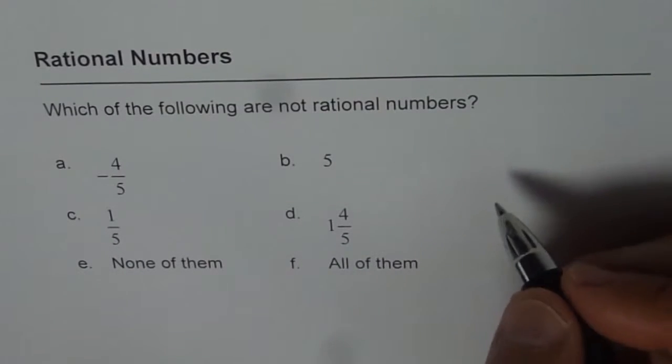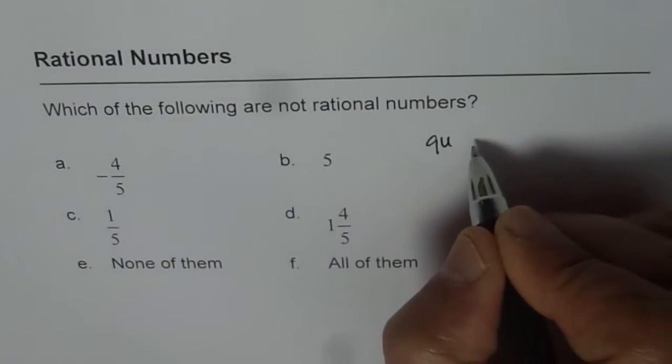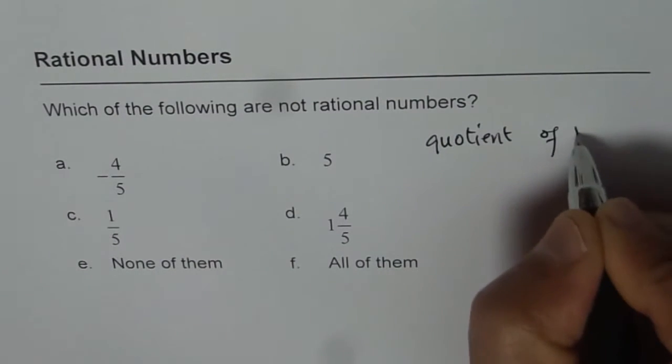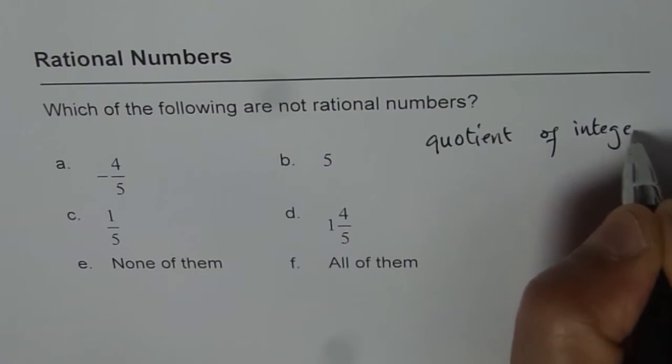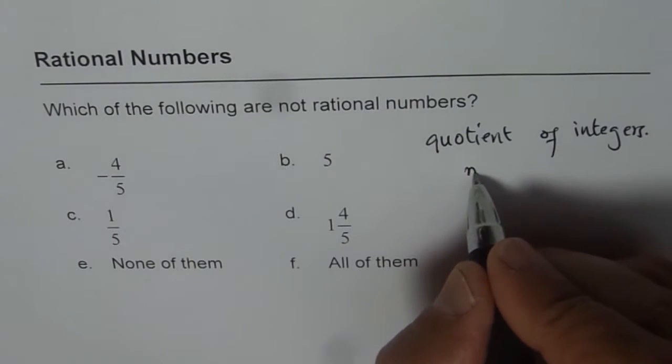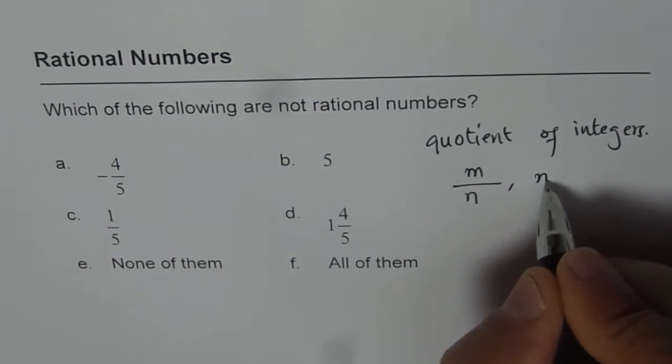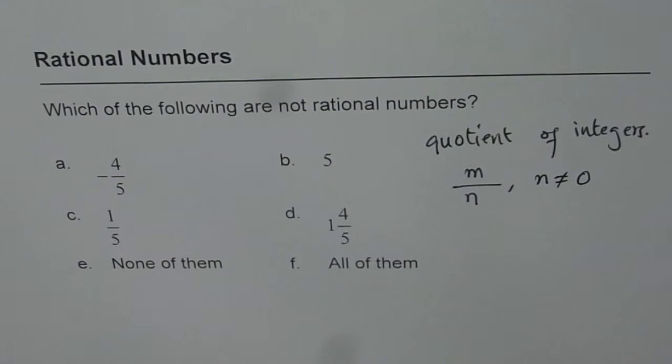As you know, rational numbers are quotient of integers. That means one integer divided by another integer, but the denominator should not be equal to 0.